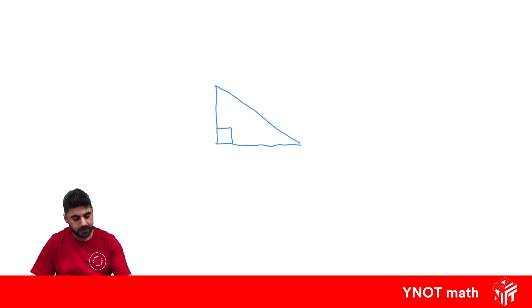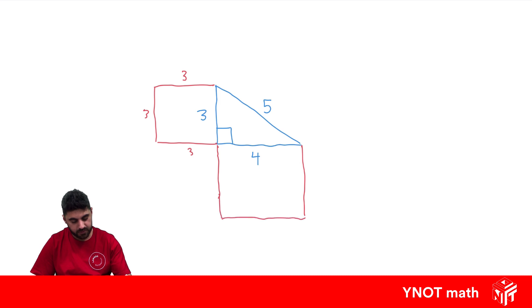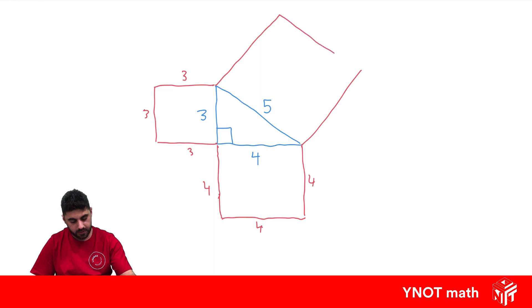There exists such a triangle where this side is 3 units long, this one's 4, and this one's 5. What I'm going to do here is put squares on each of the sides. So let's put a square here — since it's a square, this is 3, 3, and 3. Let's put a square here, which means this is 4, 4, and 4. And let's put a square on this side, which means this one's 5, 5, and 5.